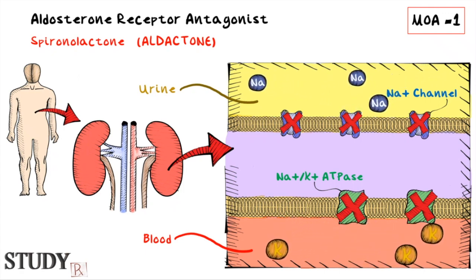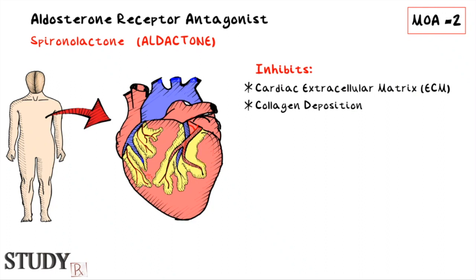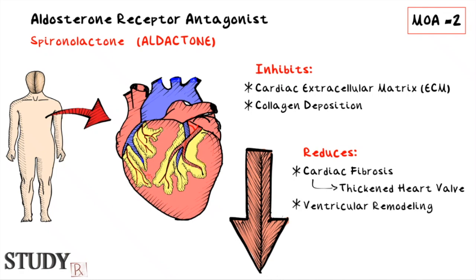The second important mechanism of action is working in the heart. Aldosterone antagonists inhibit cardiac extracellular matrix and collagen deposition. These inhibitions thereby reduce cardiac fibrosis, which is caused by excess extracellular matrix in the heart muscle. Cardiac fibrosis refers to unusual thickening of the heart valves. They also reduce ventricular remodeling, which refers to changes in the size, shape, structure, and function of the heart — this can happen as a result of exercise or after injury to the heart muscle.